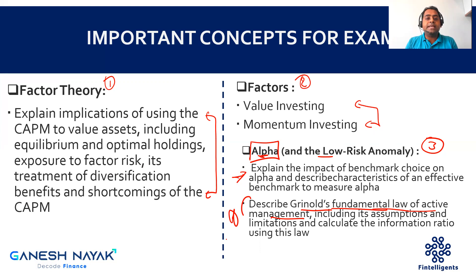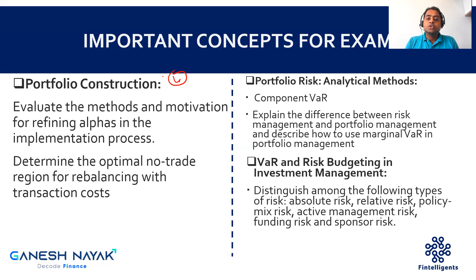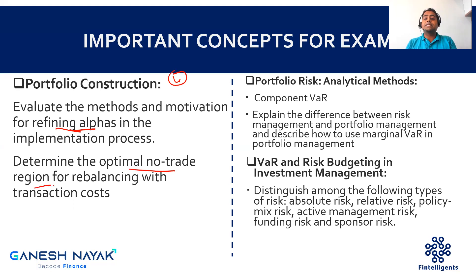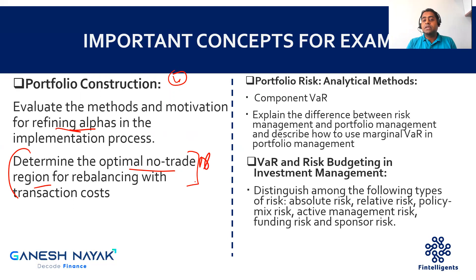Chapter four is portfolio construction. The major focus is to help you understand how exactly a portfolio is created and what methods are used. There is one concept — refining of alpha — which can get tested in the exam. There is also the optimal no-trade region, which takes transaction costs into consideration. If you constantly keep changing the composition of your portfolio, transaction costs can be very high and you might not generate any profit. This concept, tested in past exams, tells you when to buy or sell an asset by creating a range accounting for transaction costs.